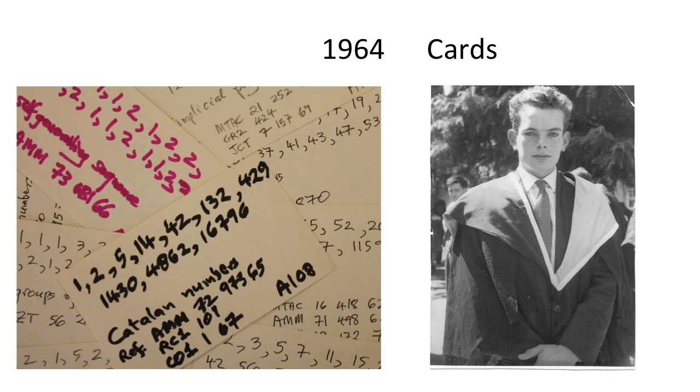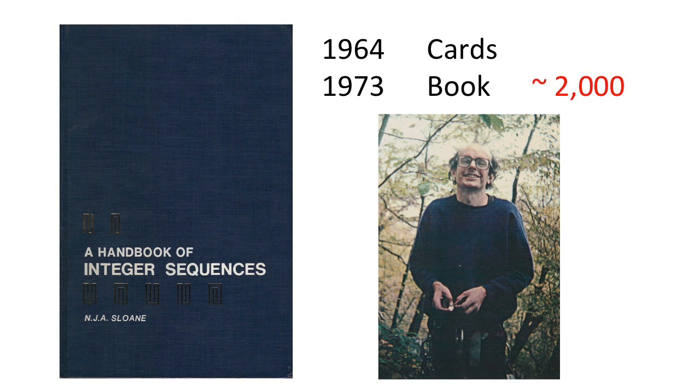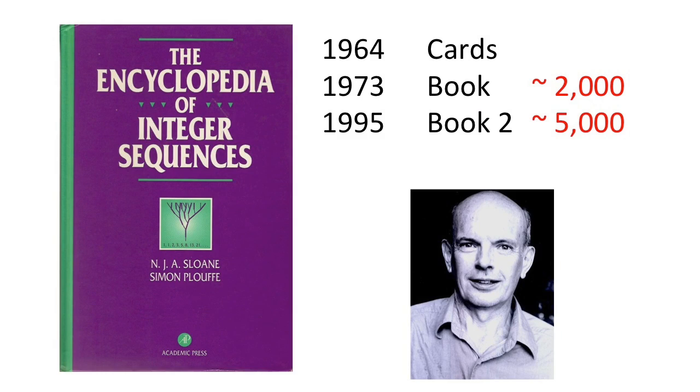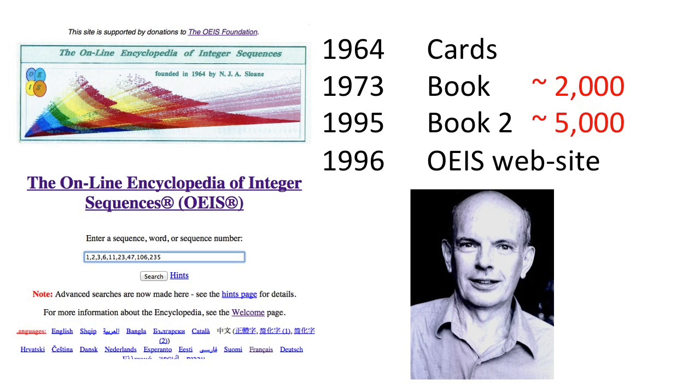And grow it did. In 1973, Sloan published his first catalog containing over 2,000 sequences. The second book with over 5,000 sequences appeared in 1995. The next year, the OEIS website was launched with 10,000 sequences.